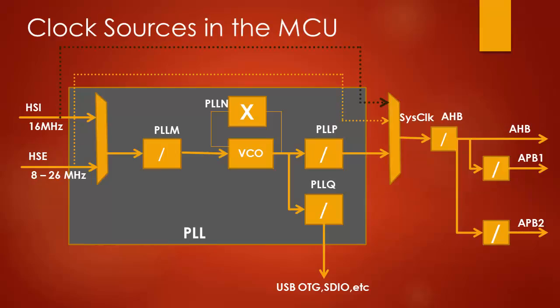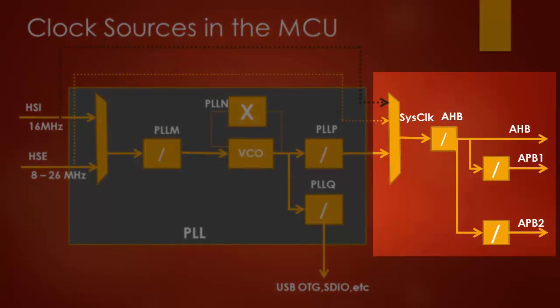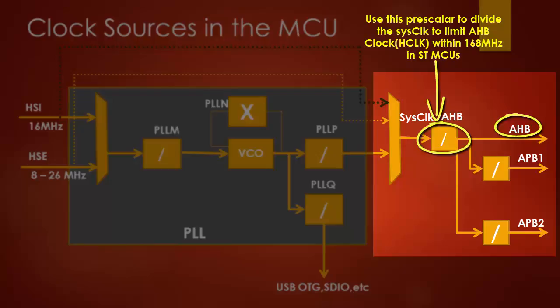Selection of the system clock is very important because all other clocks are derived from it, like HCLK, PCLK, etc. HCLK is derived from SysClock by using a prescaler value. The HCLK, which is also called HBClock, cannot exceed 168 MHz. Hence, there is a prescaler to control the HCLK.